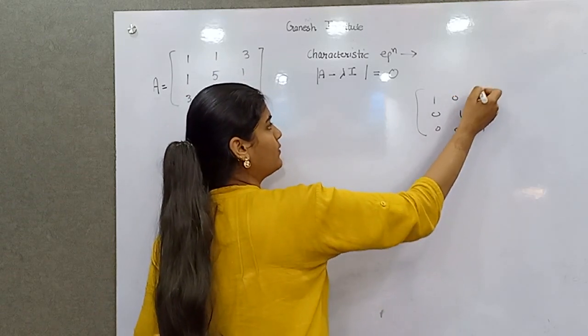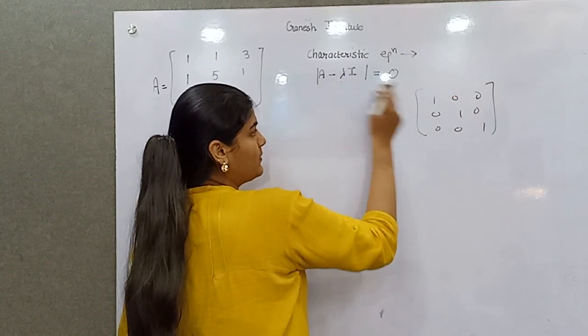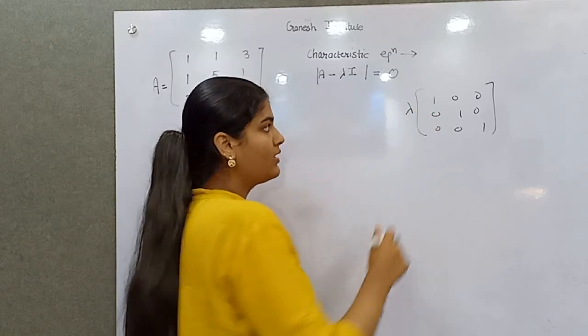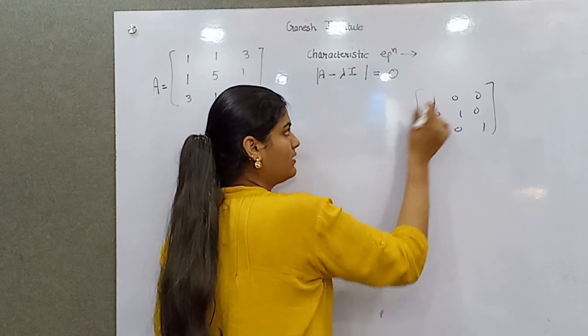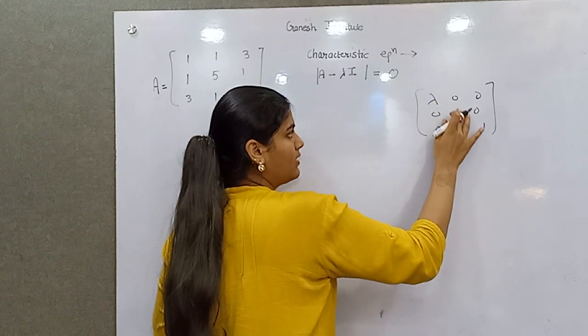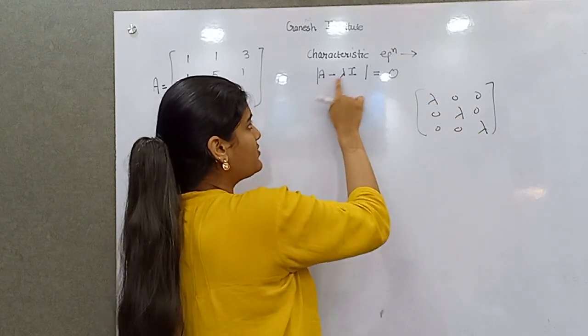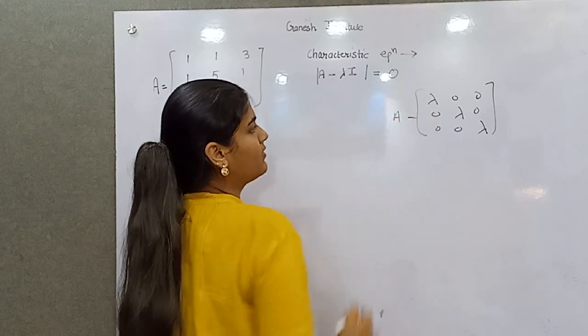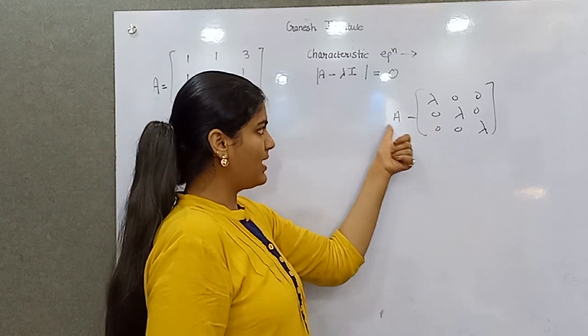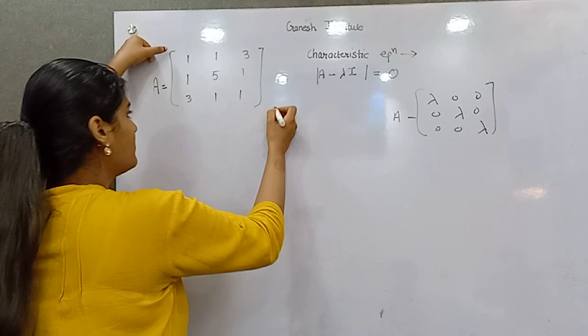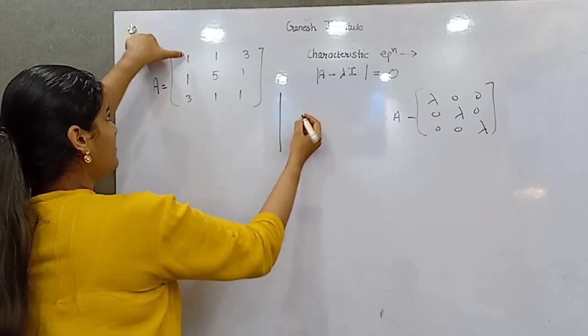So if you multiply it with scalar lambda, then it will be like this. And when you subtract this from A, it will become 1 minus lambda, 5 minus lambda, 1 minus lambda.